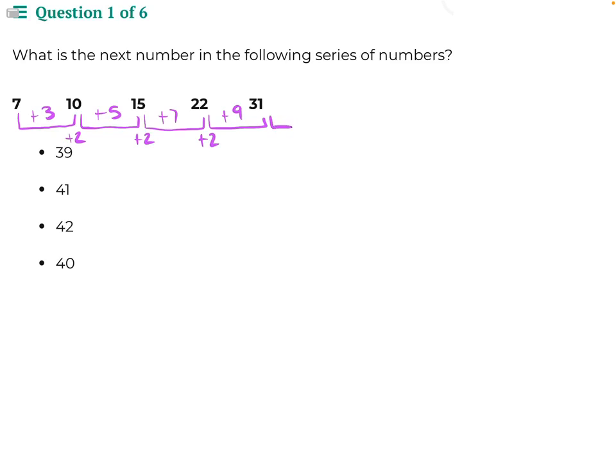So if we wanted to find the next step, the next number in our series, we would need to increase our difference by 2, which would turn 9 into 11, and then we would need to add 11 to 31. When we do that, we will get 42, making it our answer for this problem.